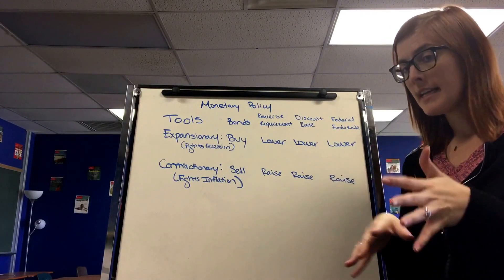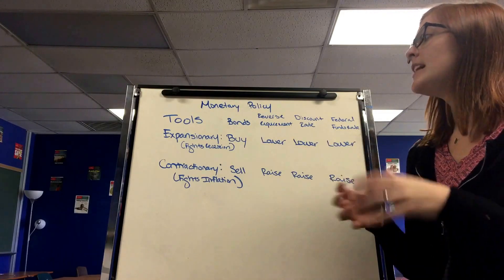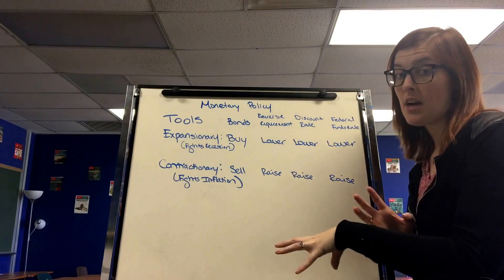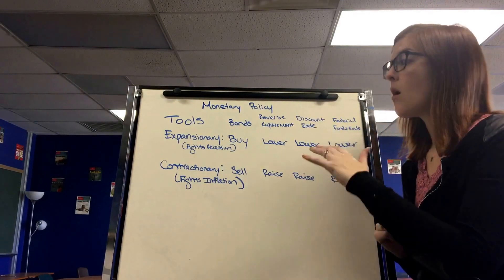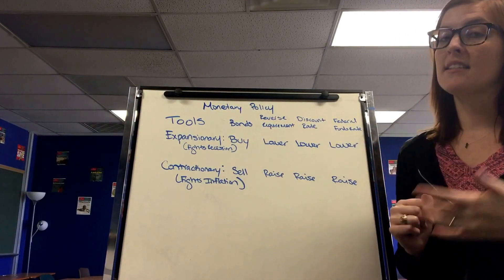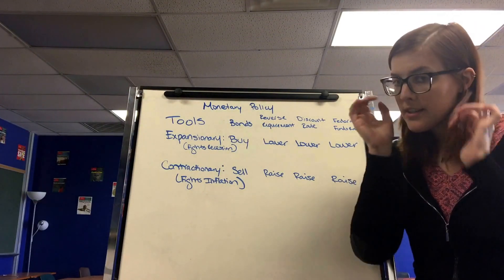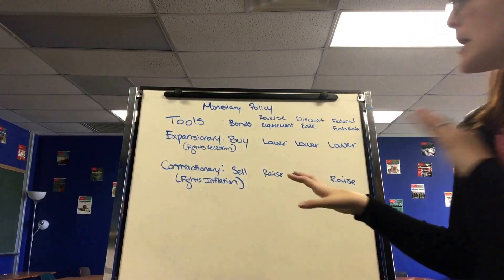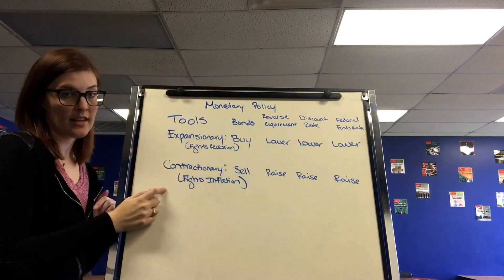Janet Yellen is the chairman of the Federal Reserve and a lot of this with the Federal Reserve is super important to what happens in the economy. This also goes with the monetary school of economics, all monetary policy. Keynesian is fiscal and classical is no government at all. Before I get into the graphs of monetary policy, let's talk about the tools they use to fight a recession and inflation.